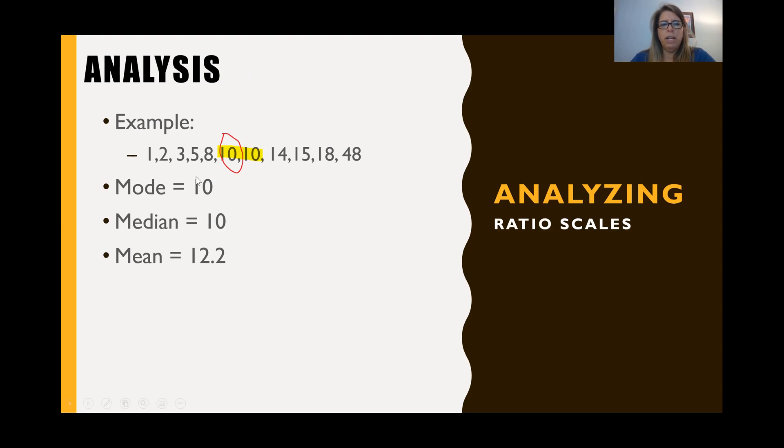So all three of these kind of tell us where the central point is. It gives us details about the central points. And mode and median are similar. And the mean is kind of close. So the mean tells us on average that people purchase about 12 bottles of water each week.